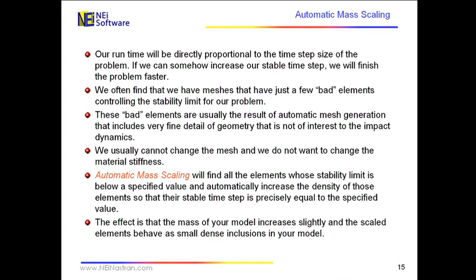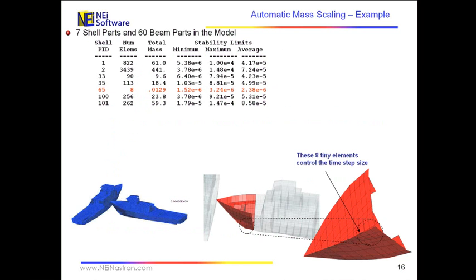So the effect of this is going to be to add a little bit of mass to your model, and I'll show you how we do that here with this simple ship collision problem that I showed you earlier. The original model in this ship, if you look at the output that comes out of NEI Explicit, we print back to you in the data check, or the scanning of the data, the stability limits for the different parts of the mesh.